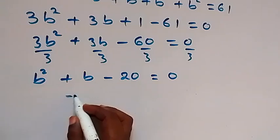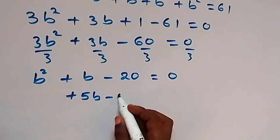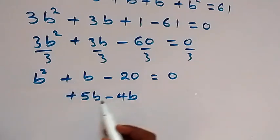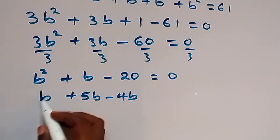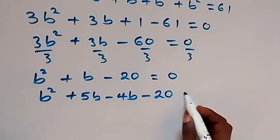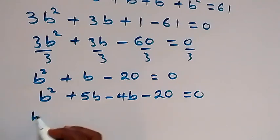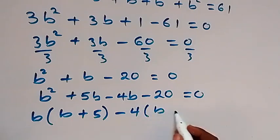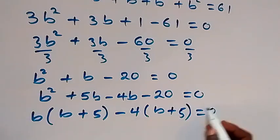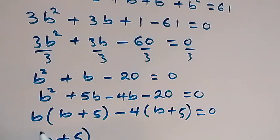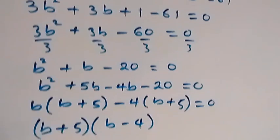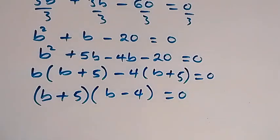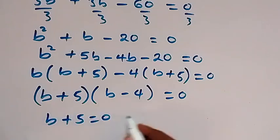Factorizing: we split the middle term as +5b - 4b, since their sum is +b and their product is -20. So we have b² + 5b - 4b - 20 = 0. Grouping: b(b + 5) - 4(b + 5) = 0, which gives (b + 5)(b - 4) = 0.